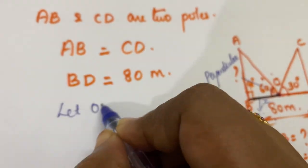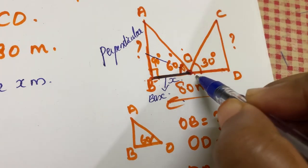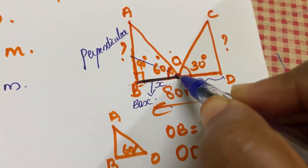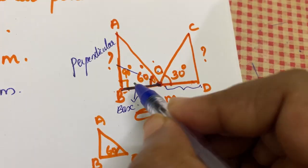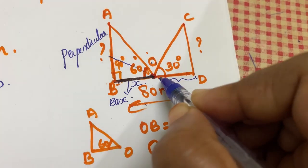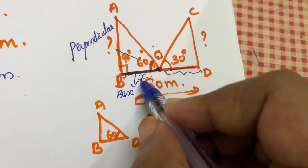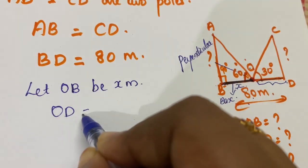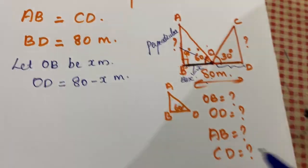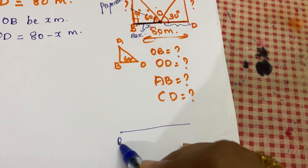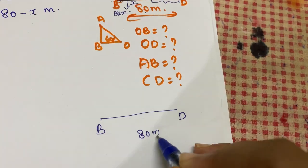Let O be x meters from one pole, so OB equals x meters. Then the distance from O to the other pole, OD, equals 80 minus x meters. The total road width is 80 meters.